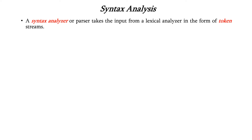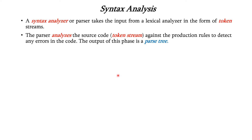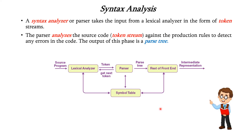To summarize, the syntax analyzer or parser takes input from the lexical analyzer in the form of tokens. The parser analyzes these tokens against the production rules and detects errors in the code. The output of this phase is the parse tree. The source program is given to the lexical analyzer which generates tokens based on requests from the parser, using regular expressions. The parser then generates the parse tree based on context-free grammar and production rules. The symbol table is used to record information about the tokens. In our next lecture, we will see in detail about derivation and its types, and also how to draw the parse tree.